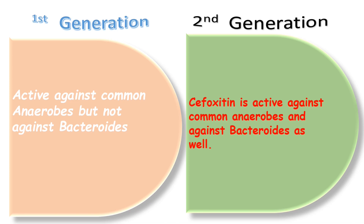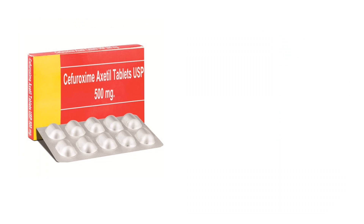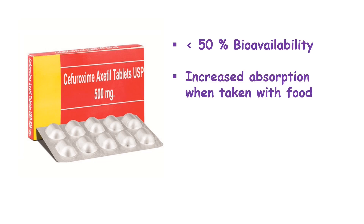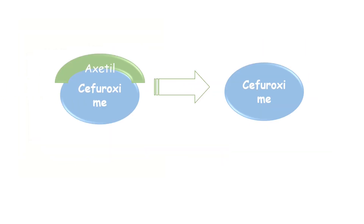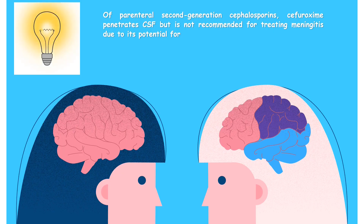Regarding pharmacokinetics of second generation cephalosporins: compared to cefaclor and cefprozil, which are well absorbed orally, the bioavailability of commonly used cefuroxime axetil is less than 50%, though absorption is enhanced when taken with food. The suspension form is less bioavailable than the tablet form. Cefuroxime axetil is hydrolyzed rapidly in the GI tract and in serum to its active parent compound, cefuroxime.